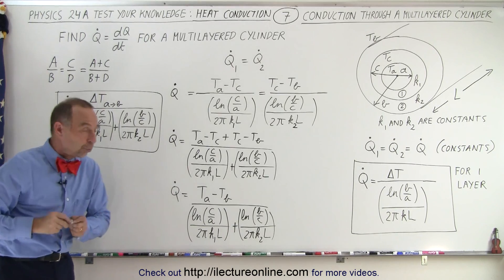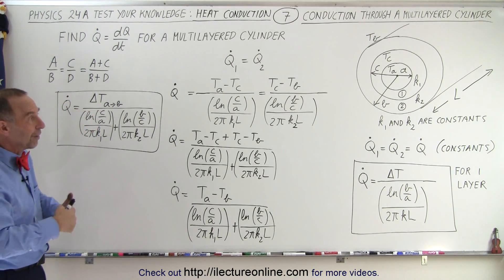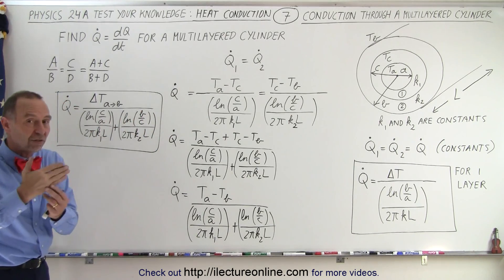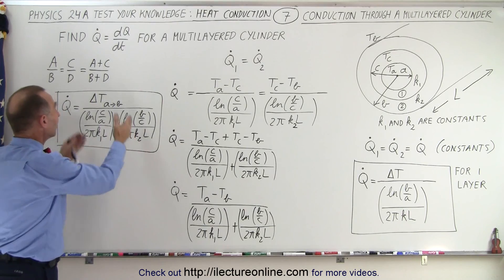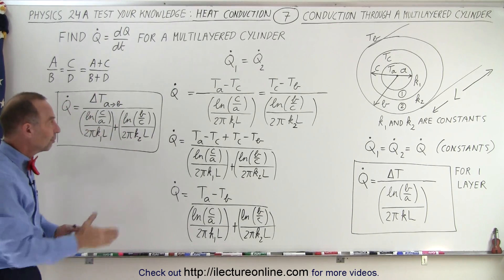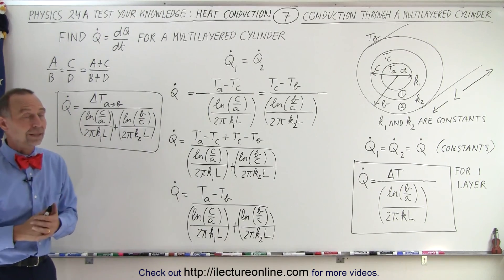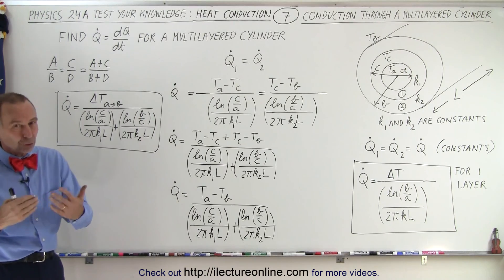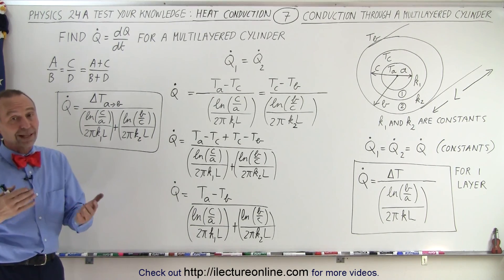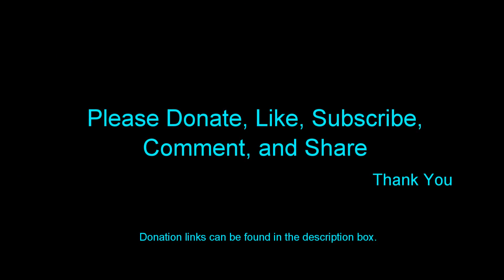This equation is for two layers, but you can see that if we had three, four, or five layers, we would simply keep adding the heat resistance of each individual layer in the denominator, while the numerator remains the total temperature difference between the inside and the outside of the cylinder. That's how we calculate the heat flow Q dot through the sides of a multilayer cylinder.